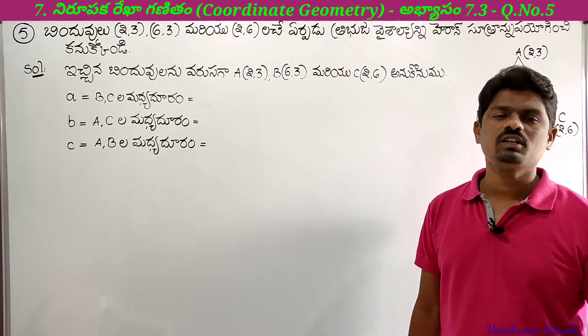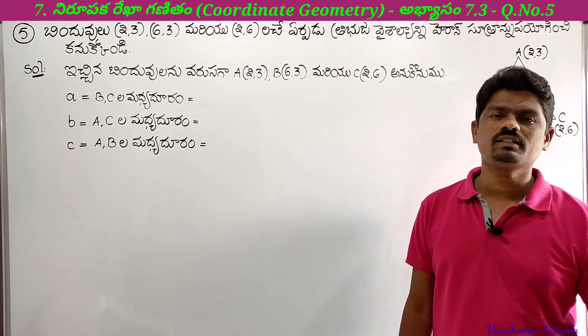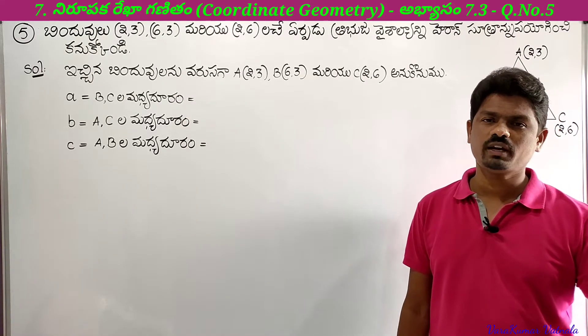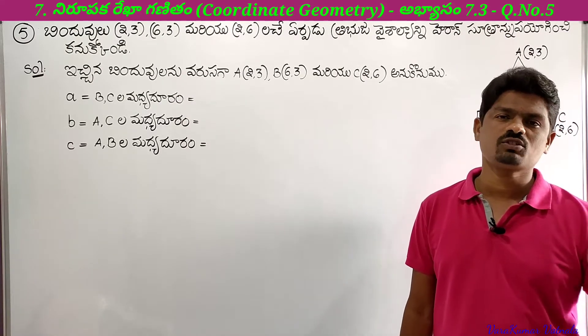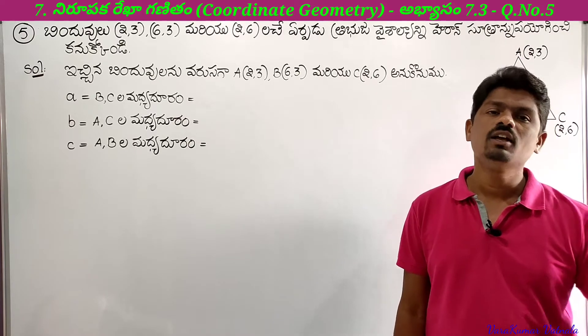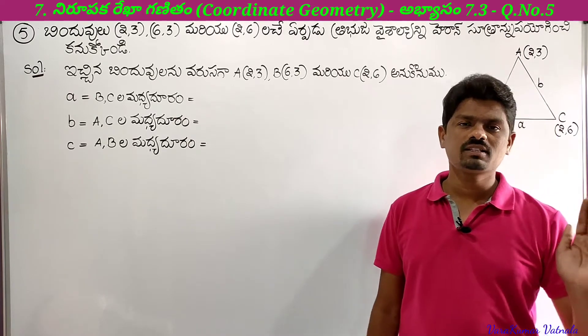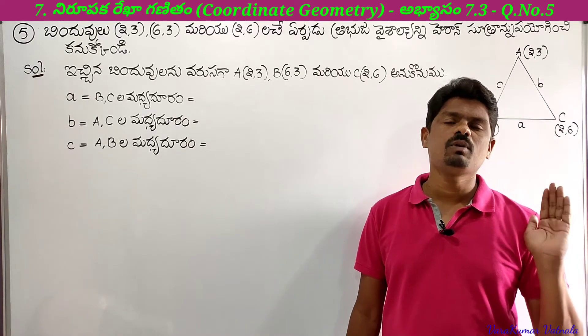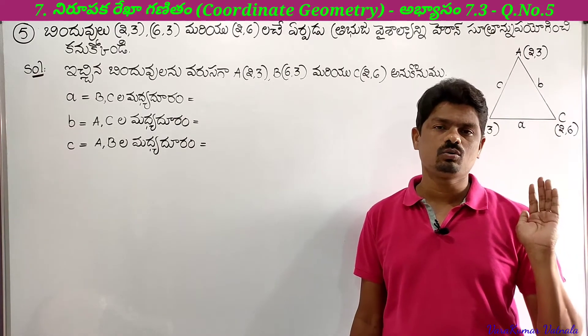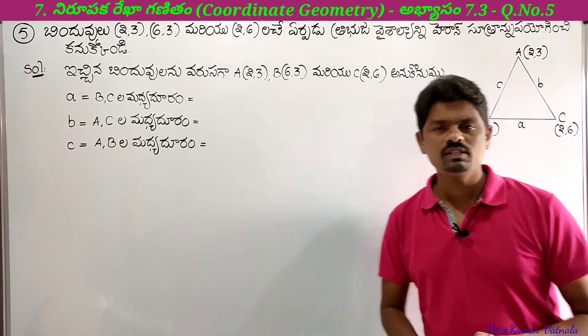The formula is square root of s into s minus a into s minus b into s minus c, where S equals A plus B plus C by 2. So ABC values are given.